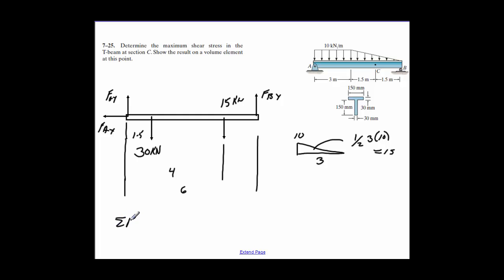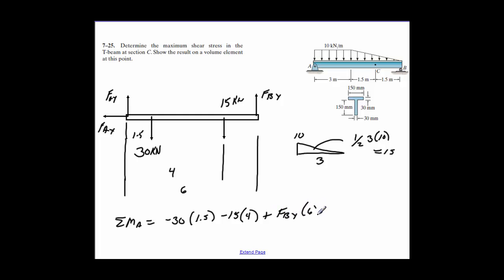And then the distance from here to here would be a total of 6. We sum moments around A and set that equal to 0. We get: minus 30 kilonewtons times 1.5, minus 15 times 4, plus FBY times 6 equals 0. Solving for FBY gives FBY = 17.5 kilonewtons.